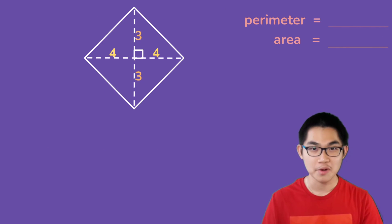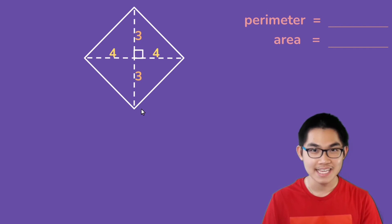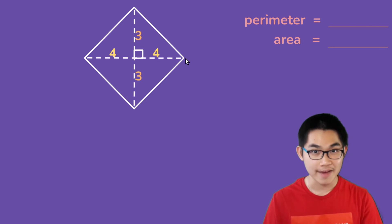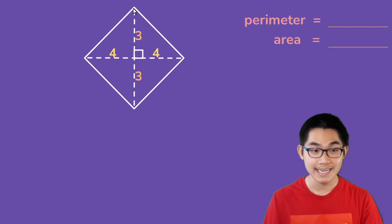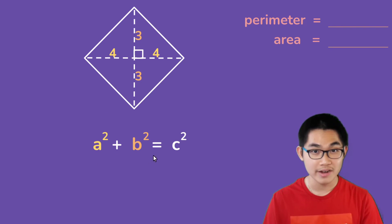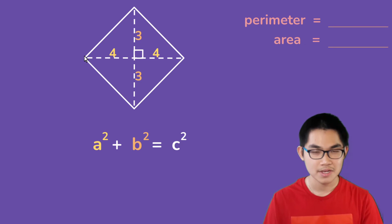Let's do one more example — go ahead and find the perimeter and the area of this kite. To find the perimeter, we need the length of these sides, but they are not given, so we have to find them using the Pythagorean theorem, which says that a squared plus b squared is equal to c squared, where a and b are the shorter sides and c is the hypotenuse.